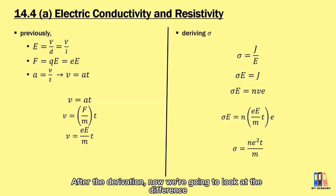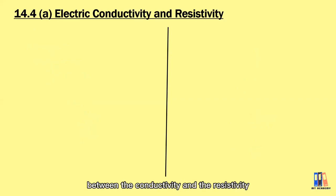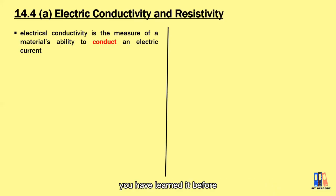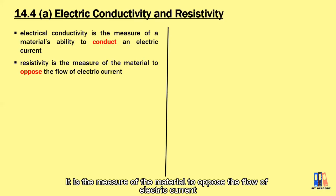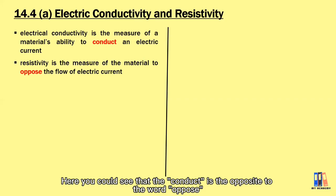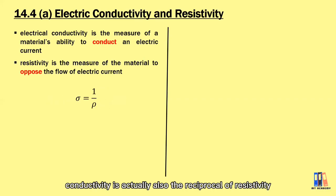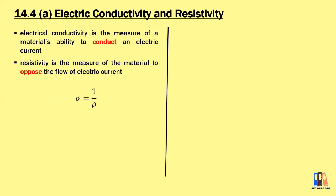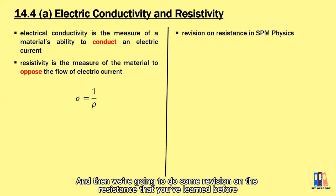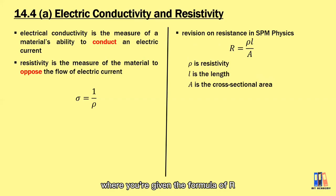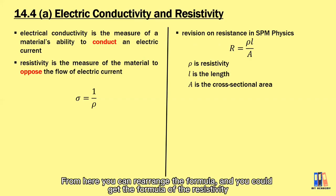Now we're going to look at the difference between conductivity and resistivity. Electrical conductivity is defined as the measure of a material to conduct electric current, while resistivity is the measure of a material to oppose the flow of electric current. Conductivity is therefore the reciprocal of resistivity. From the formula R equal to resistivity multiplied by length divided by cross-sectional area, we can rearrange to get the formula for resistivity.